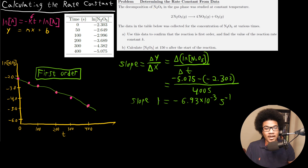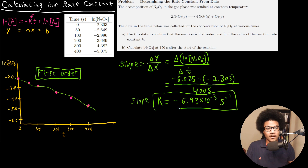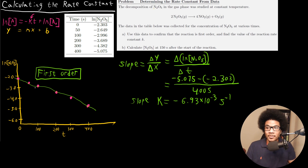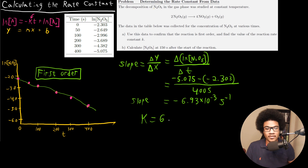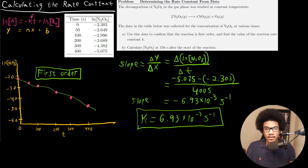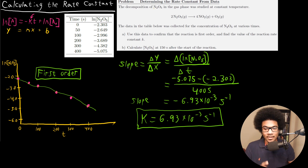This slope is actually the value of K, our reaction rate constant. Keep in mind the sign — in the first-order integrated rate law equation, the slope corresponds to negative K. So this is your slope, and K would just be the positive value: 6.93 times 10 to the negative three per second. That's your value for K. Now that we have K using the slope from the data, let's look at what part B is asking.